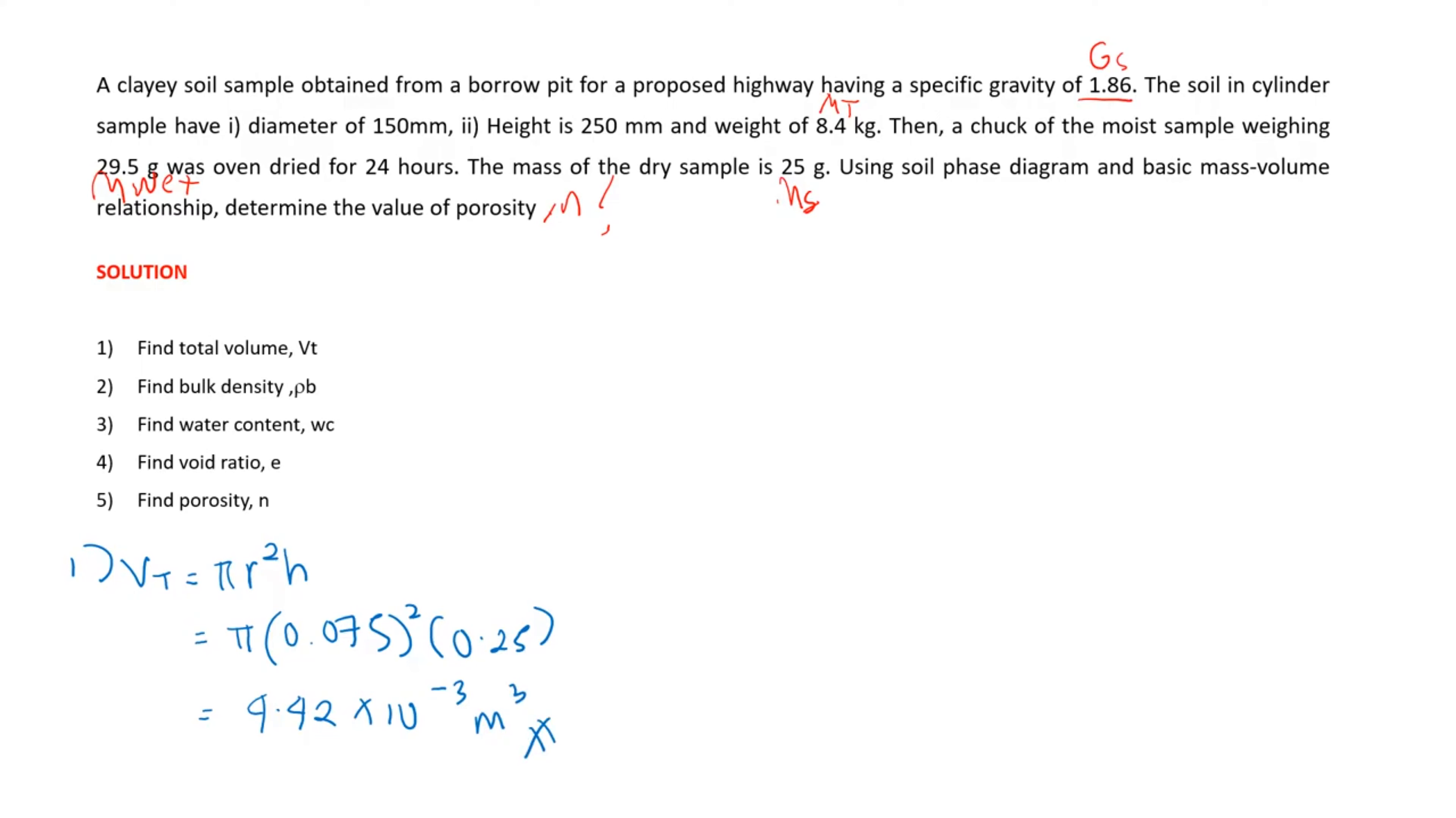Next, find the bulk density. The bulk density equals total mass divided by total volume. Total mass is 8.4 kg divided by the volume of 4.42 cubic meters, which equals approximately 1,900 kg per cubic meter.